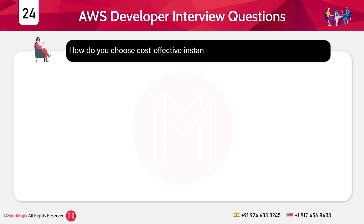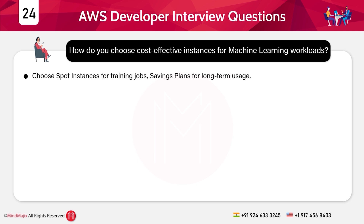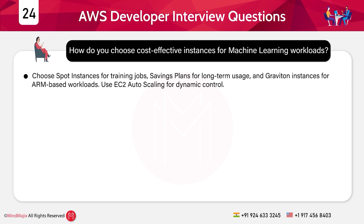Question 24: How do you choose cost-effective instances for machine learning workloads? Answer: Choose spot instances for training jobs, Savings Plans for long-term use, and Graviton instances for ARM-based workloads. Use EC2 Auto Scaling for dynamic control.